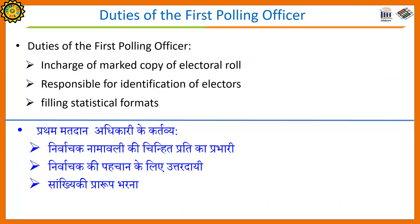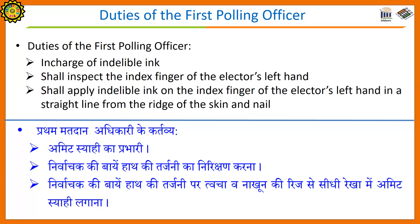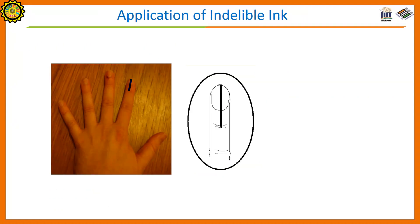Duties of the First Polling Officer: The first polling officer is in charge of the marked copy of the electoral roll. Is responsible for identification of electors. Filling statistical formats. In charge of indelible ink. Shall inspect the index finger of the elector's left hand. Shall apply indelible ink on the index finger of the elector's left hand in a straight line from the ridge of the skin and nail. The way of application of indelible ink is shown on the screen.